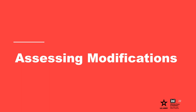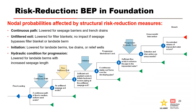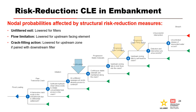Assessing Modifications. The formulation of structural risk reduction measures to address potential failure modes will focus on one or more nodes of the event tree to reduce the likelihood of their occurrence. These are the nodes that are typically targeted for backward erosion piping. Structural risk reduction measures must either interrupt the continuous flow path, provide a filtered exit, or reduce hydraulic gradients. These are the nodes typically targeted for concentrated leak erosion in the embankment. Providing a filter as a defensive measure is the most effective structural risk reduction measure.